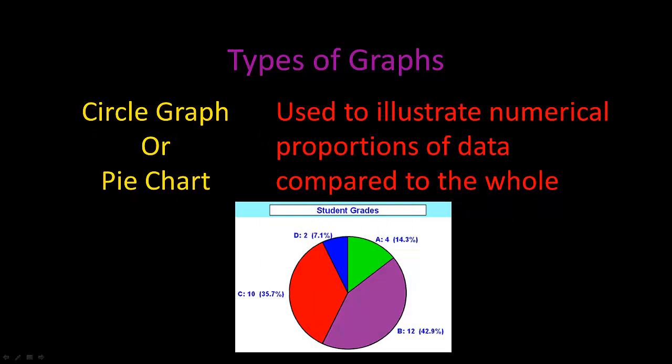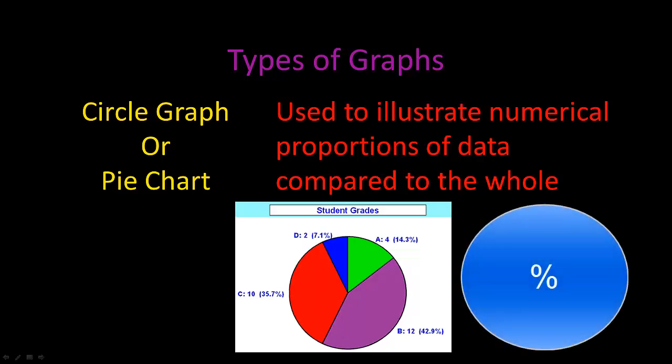The first type is the circle graph, also known as the pie chart. This type of graph is used to illustrate numerical proportions compared to the whole part, also known as percentages.